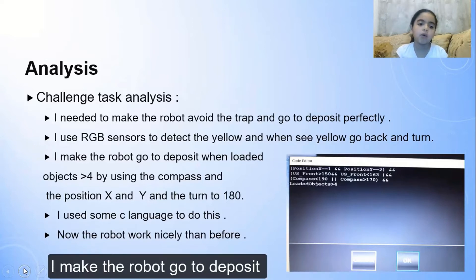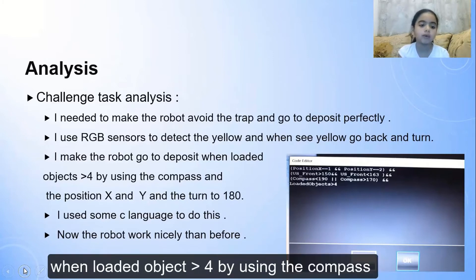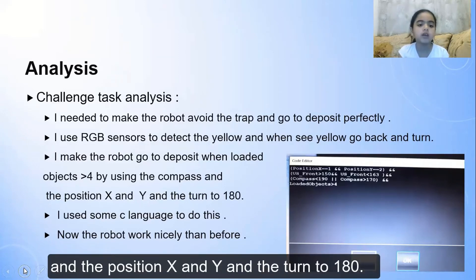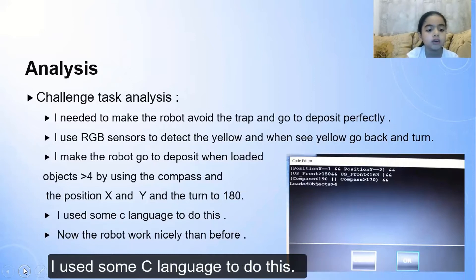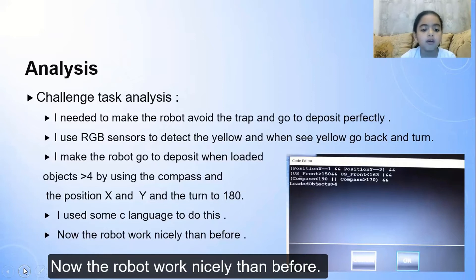I made the robot go to deposit with loaded object more than 4 by using the compass and position X and Y and turn to 180. I used some C language to do this. Now the robot worked nicely than before.